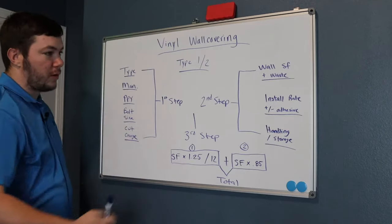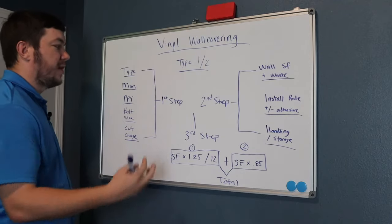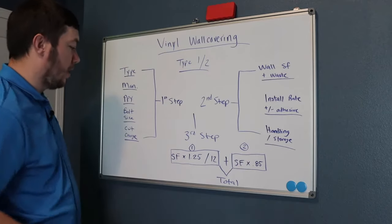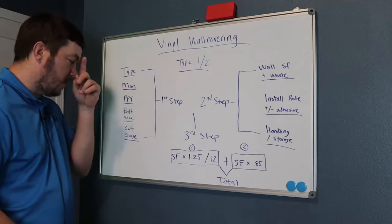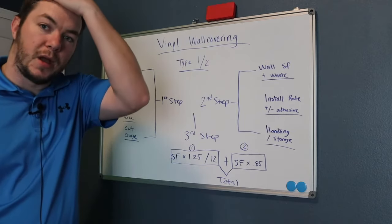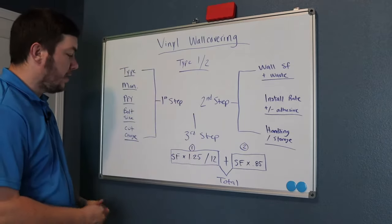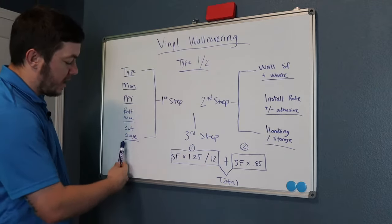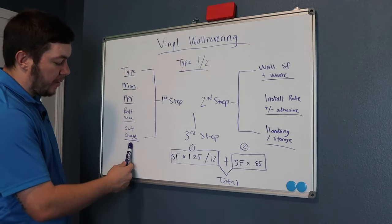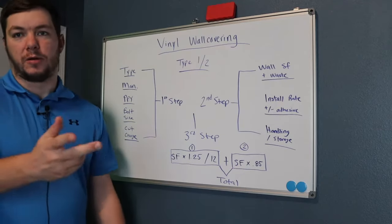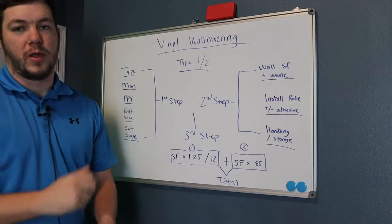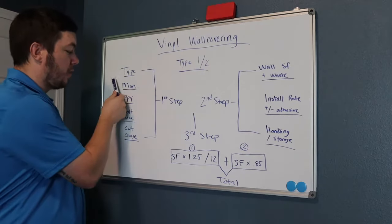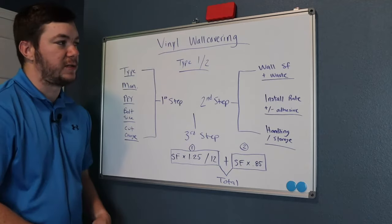So if I call Wolf Gordon and it's a Wolf Gordon type two vinyl wall covering, I'll give them the pattern code and they'll tell me this is $25 a yard or whatever. They'll tell me the standard bolt size is 15 yards or 30 yards. And they'll say anything under 30 yards, they'll give what's called a cut charge — $2 a yard, $4 a yard. If you order less than their minimum, that's when you get a cut charge. So you'll have to figure out all this stuff before we can get to step two.